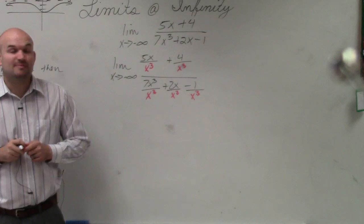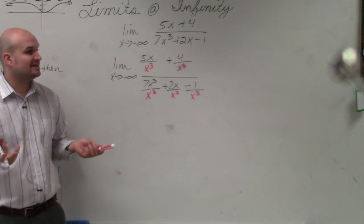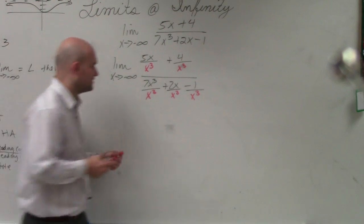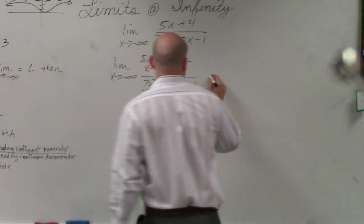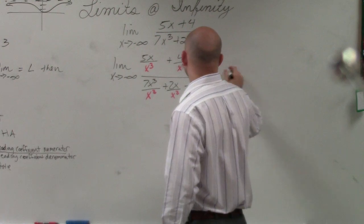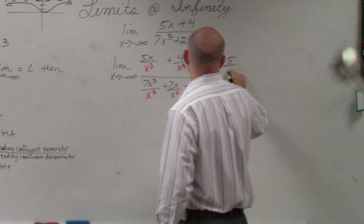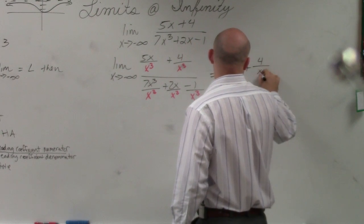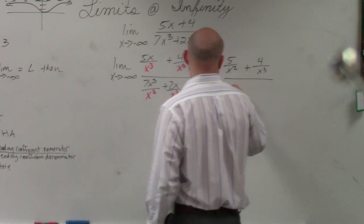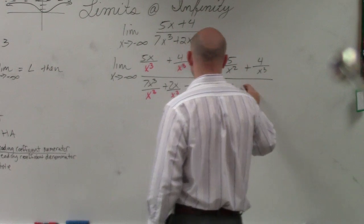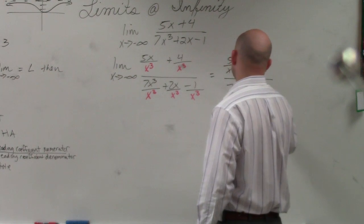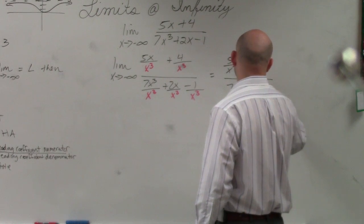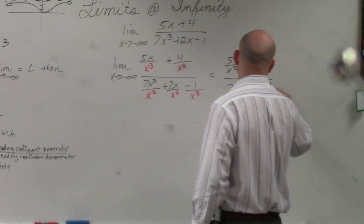Now what we basically want to do is evaluate this and see what everything simplifies to. This becomes 5 over x squared plus 4 over x cubed, divided by 7 plus 2 over x squared minus 1 over x cubed.